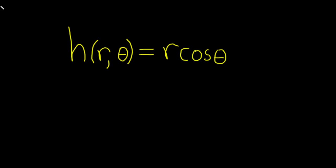Hi, in this video we're going to find the first order partial derivatives of this function. So we have h of r, theta equals r times cosine of theta.